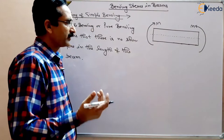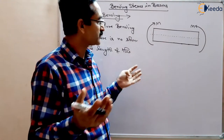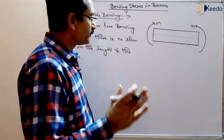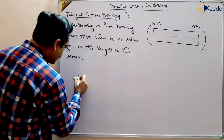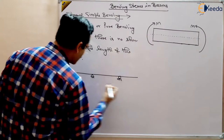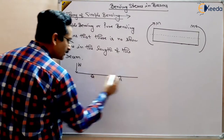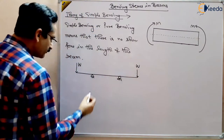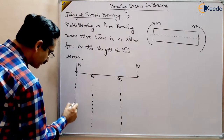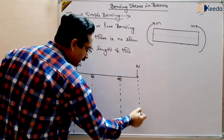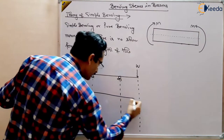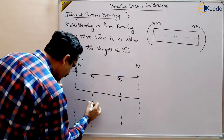Now, is it possible that when we apply a load, there is no shear stress or shear force in the length of the beam? Actually, it is not possible in general, but it is possible in a certain part of the beam. For example, suppose we have an overhang beam and we apply a load W here and the same load W here. When you draw the shear force and bending moment diagram of this beam — which we have already discussed — you will get this type of shear force diagram.